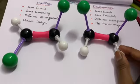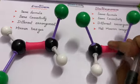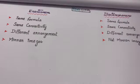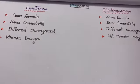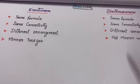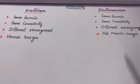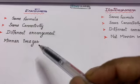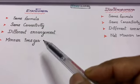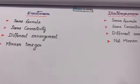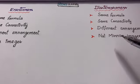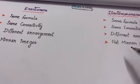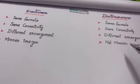Ultimately, both enantiomers and diastereomers have the same molecular formula and connectivity but different arrangements. The key difference is that enantiomers have one chiral center and are mirror images of each other, while diastereomers are not mirror images of each other. Thank you for watching this video.